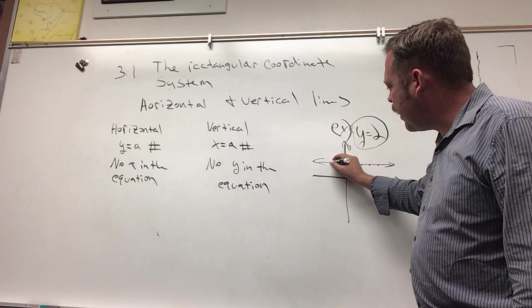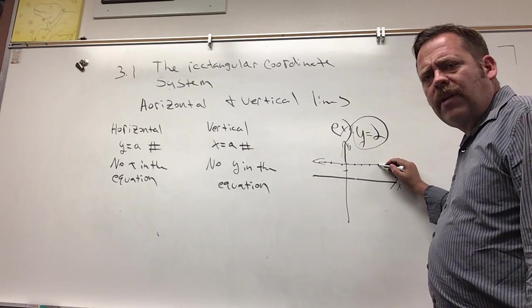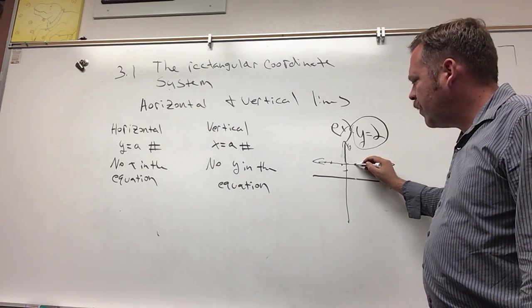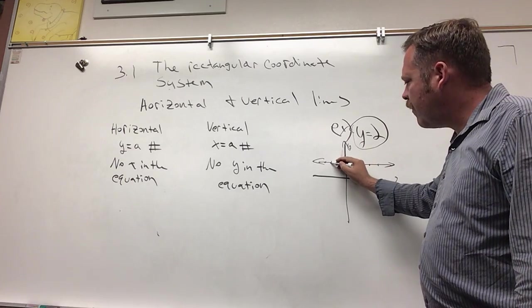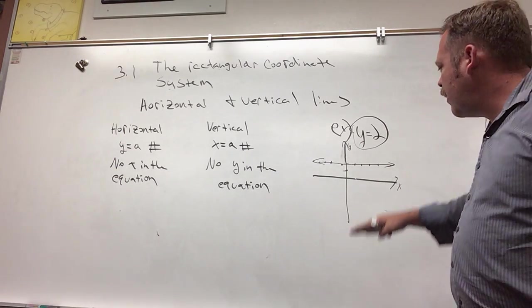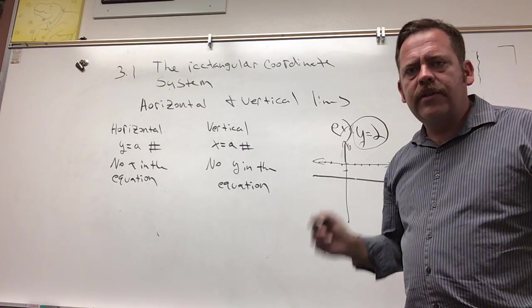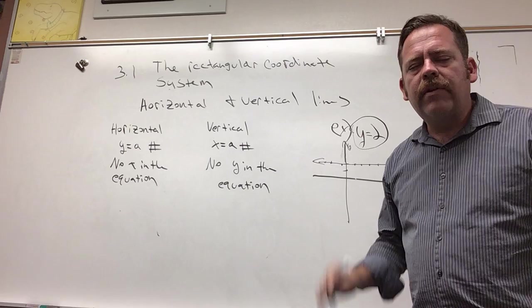If I'm here, what's the y coordinate? What if I'm here, what's the y coordinate? What if I'm here, what's the y coordinate? So no matter what, if you have a horizontal line that crosses the y-axis at 2, the y coordinate of that line will always equal 2.